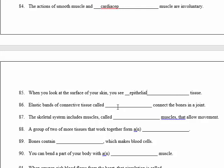Number 86: elastic bands of connective tissue — the parts that connect bones to the joint — are called tendons.